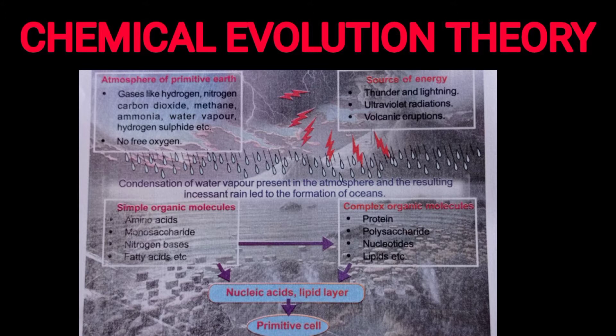Simple organic molecules formed in the primitive ocean include amino acids, monosaccharides, nitrogen bases, fatty acids, etc. These then combined to form complex organic molecules: amino acids formed proteins, polysaccharides, nucleotides, and lipids.